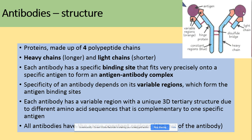What is important about the antibody is that those variable regions making up the binding sites are specific — specific for every single antigen. Each antibody has a variable region, and the reason for being specific comes from its unique 3D tertiary structure. The sequence of amino acids affects the function and structure of the protein, and that different amino acid sequence will be complementary to one specific antigen.